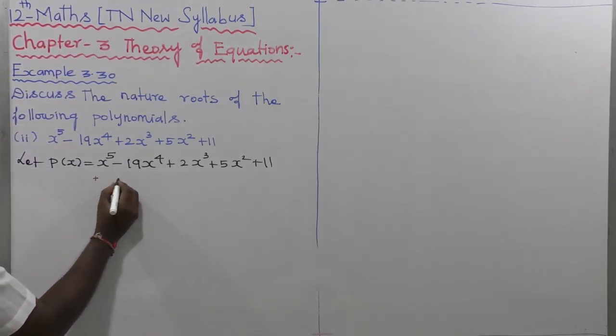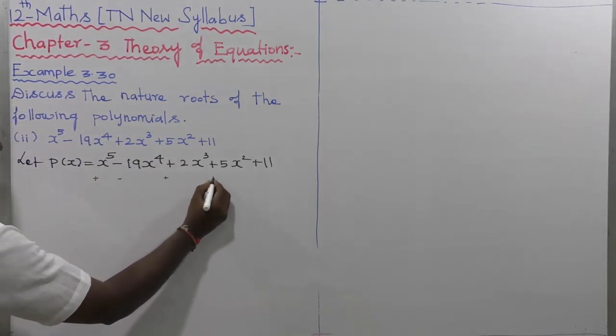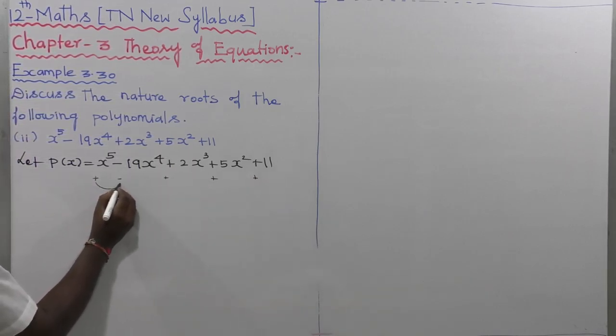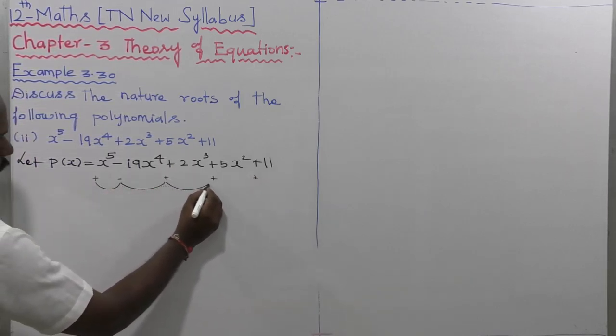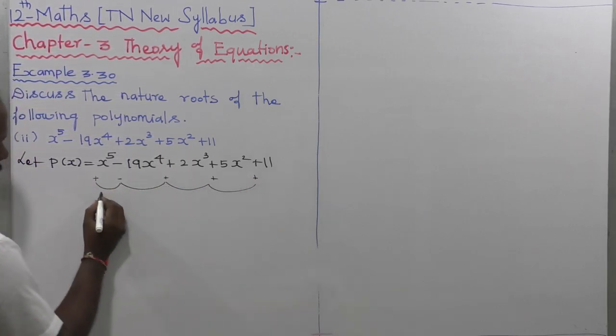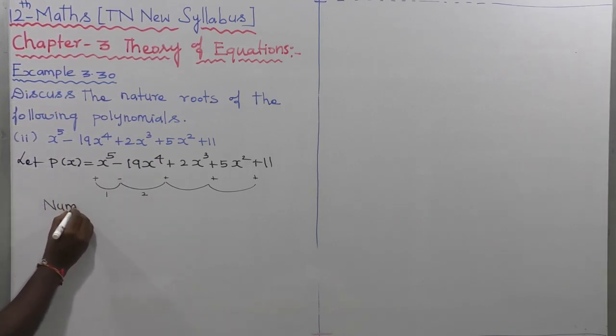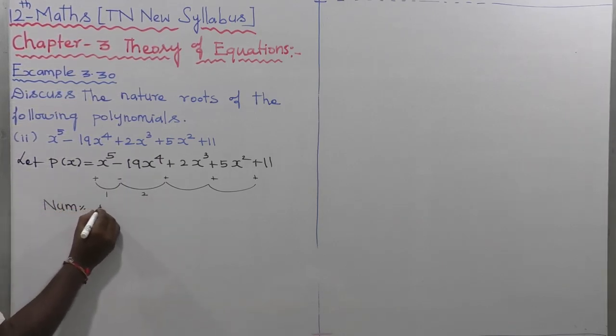The signs go: first one plus, next minus, next plus, next plus, next plus. So first change, then second change. This one is not changing. Number of sign change equal to 2.